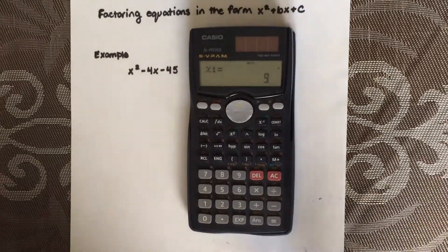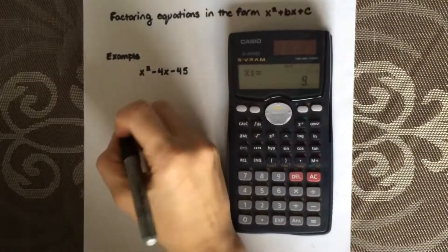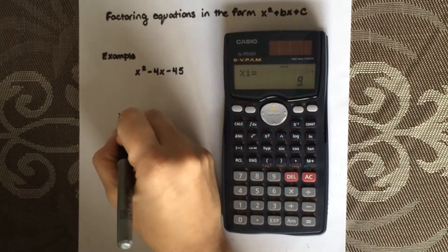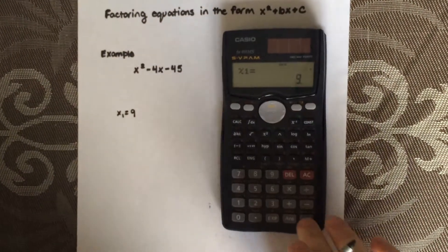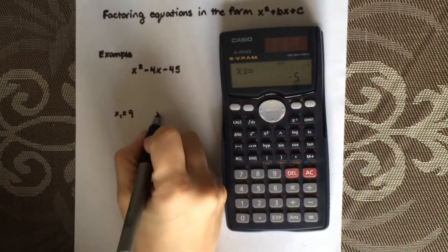You'll notice it says x1 is 9, so I'm going to write that down. And then x2 is negative 5.